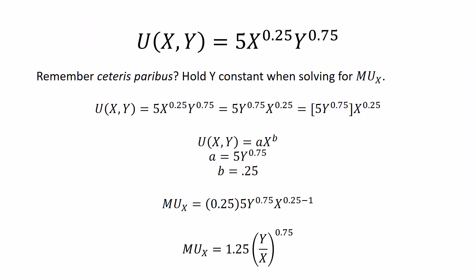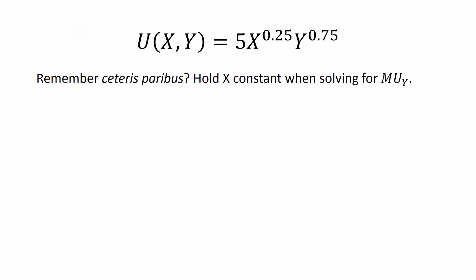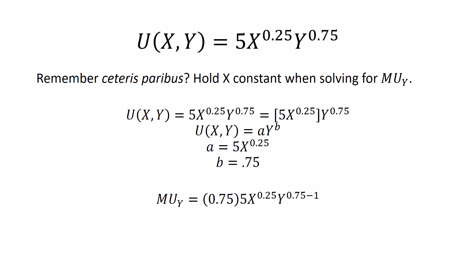Okay, let's see if we can solve for the marginal utility of good y. Same idea. We're going to keep relying on ceteris paribus, only now we're going to hold x constant. So utility function, we don't need to rearrange it because y is already separated. We can bracket off the 5x to the 0.25 and hold all that constant. Our utility function has the power form where a is 5 times x to the 0.25, b is 0.75. So your marginal utility of good y is 0.75 times 5x to the 0.25, that's b times a, times y to the 0.75 minus 1, which comes out to be 3.75 times x to the 0.25 divided by y to the 0.25, which comes out to 3.75 times (x/y) to the 0.25.